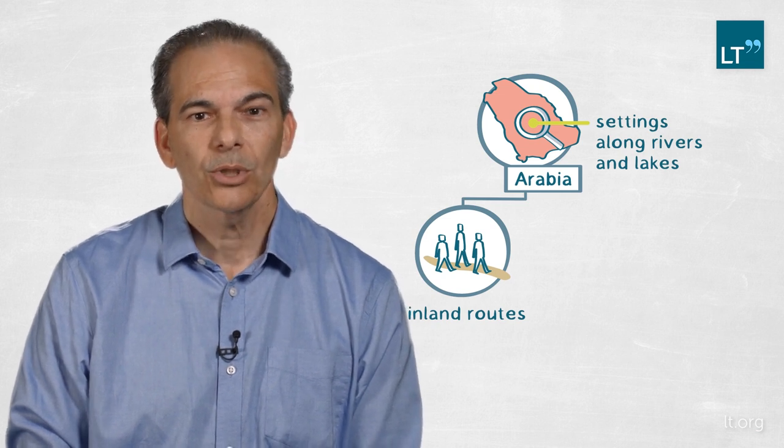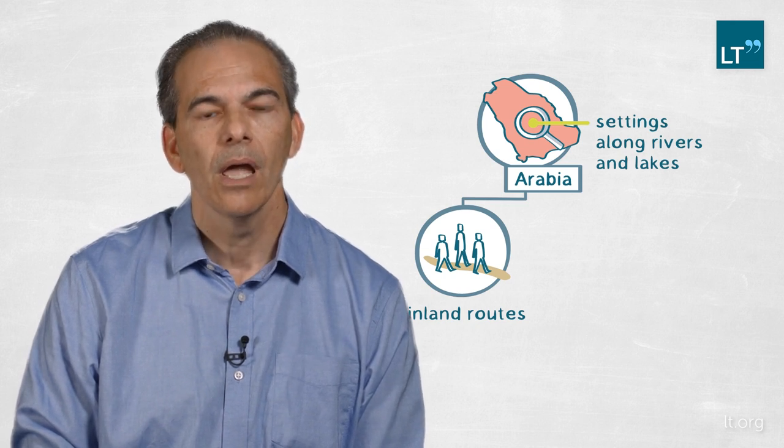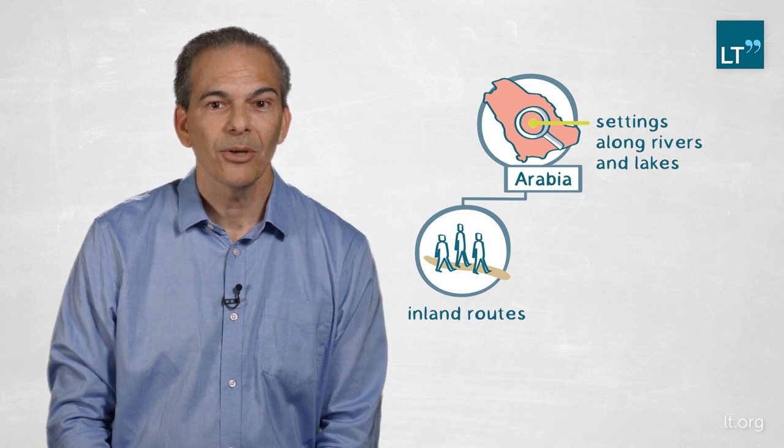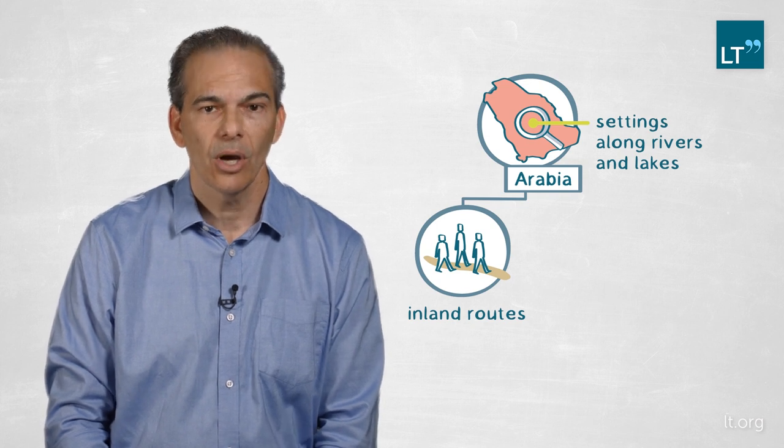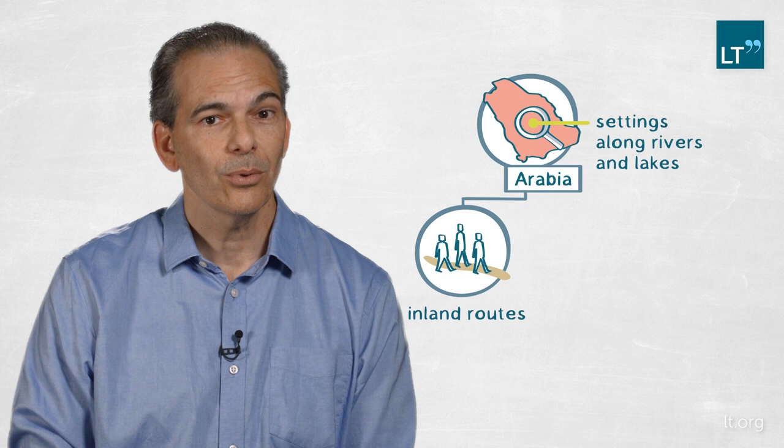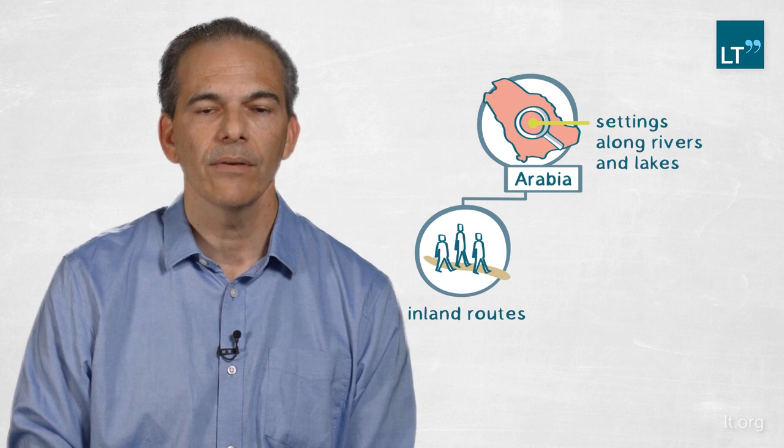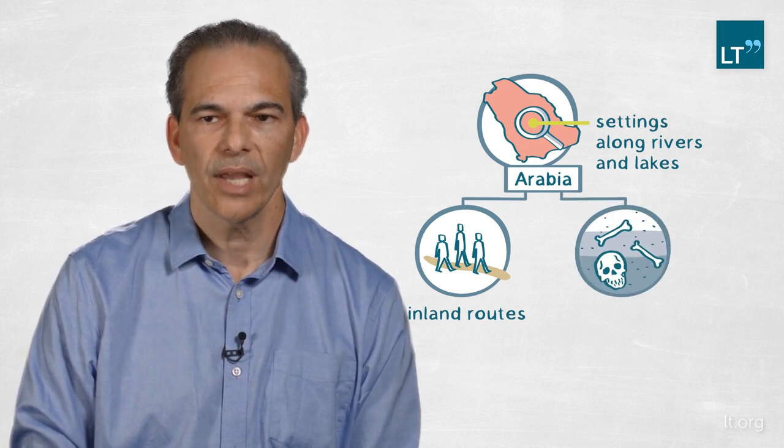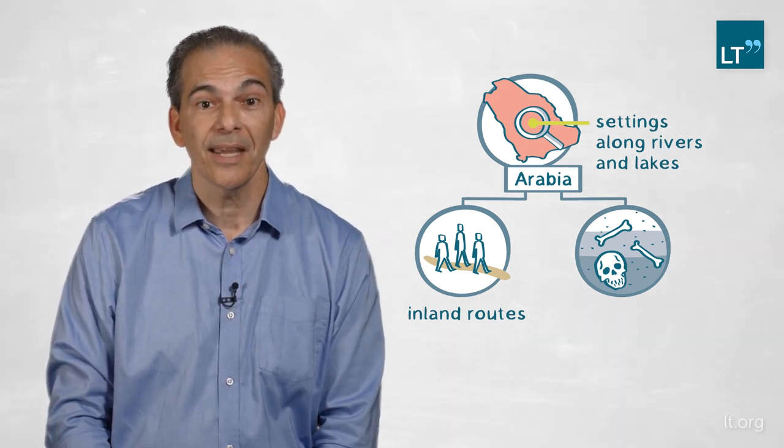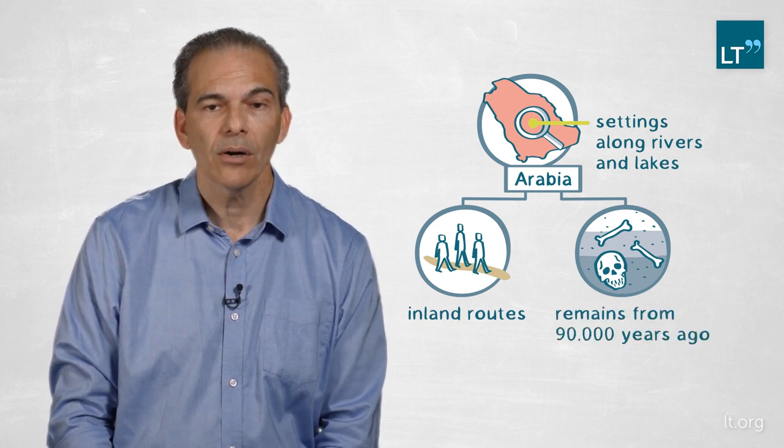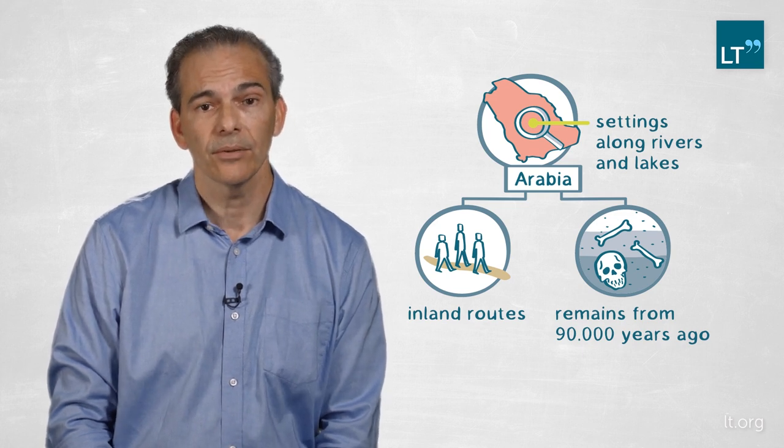The coasts were traditionally thought to be the route of expansion of modern humans out of Africa. We have proven that modern humans were actually using inland routes as well as potentially coastal routes. We've recently found fossil remains that represent Homo sapiens itself. The bones of Homo sapiens in Arabia date to 90,000 years ago, far earlier than the 60,000-year-old hypothesis.